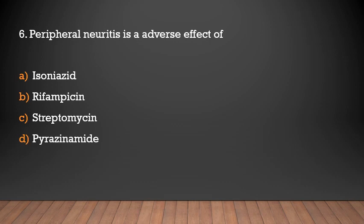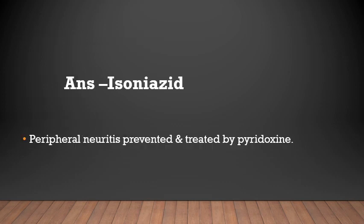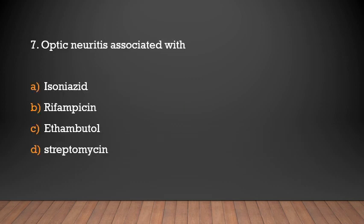Peripheral neuritis is an adverse effect of which drug? Isoniazid, Rifamycin, Streptomycin, or Pyrazinamide? Answer: Isoniazid. Peripheral neuritis is an adverse effect of Isoniazid, and it can be prevented and treated by Pyridoxine.